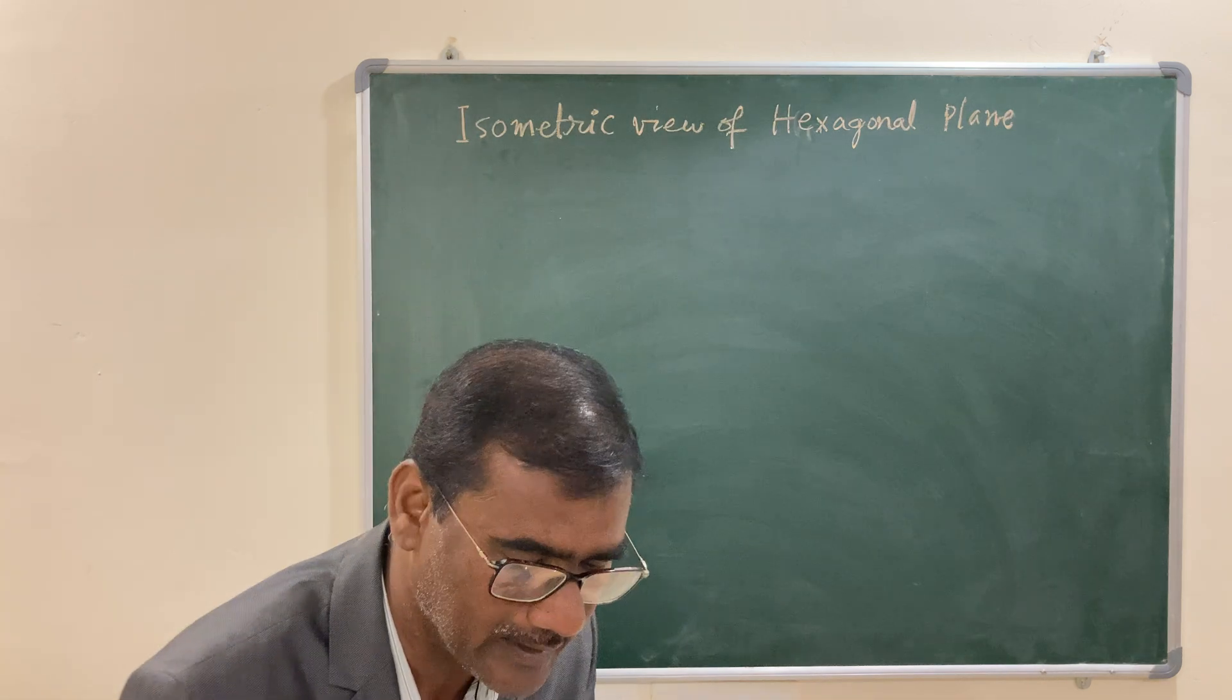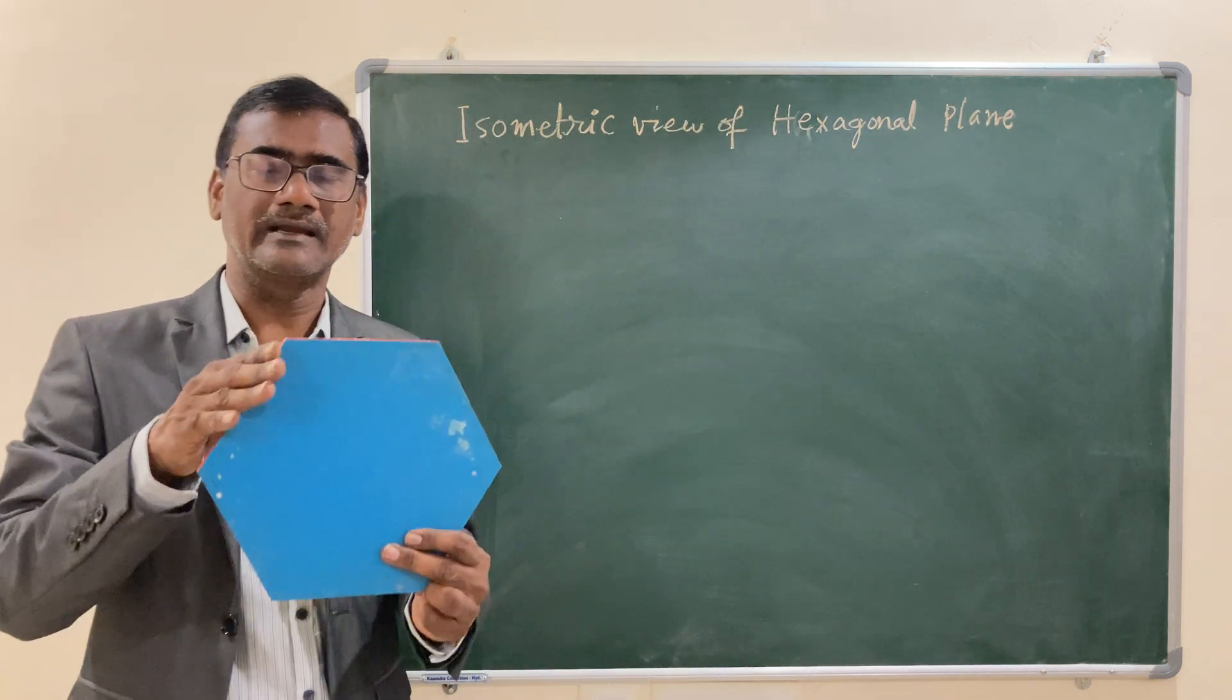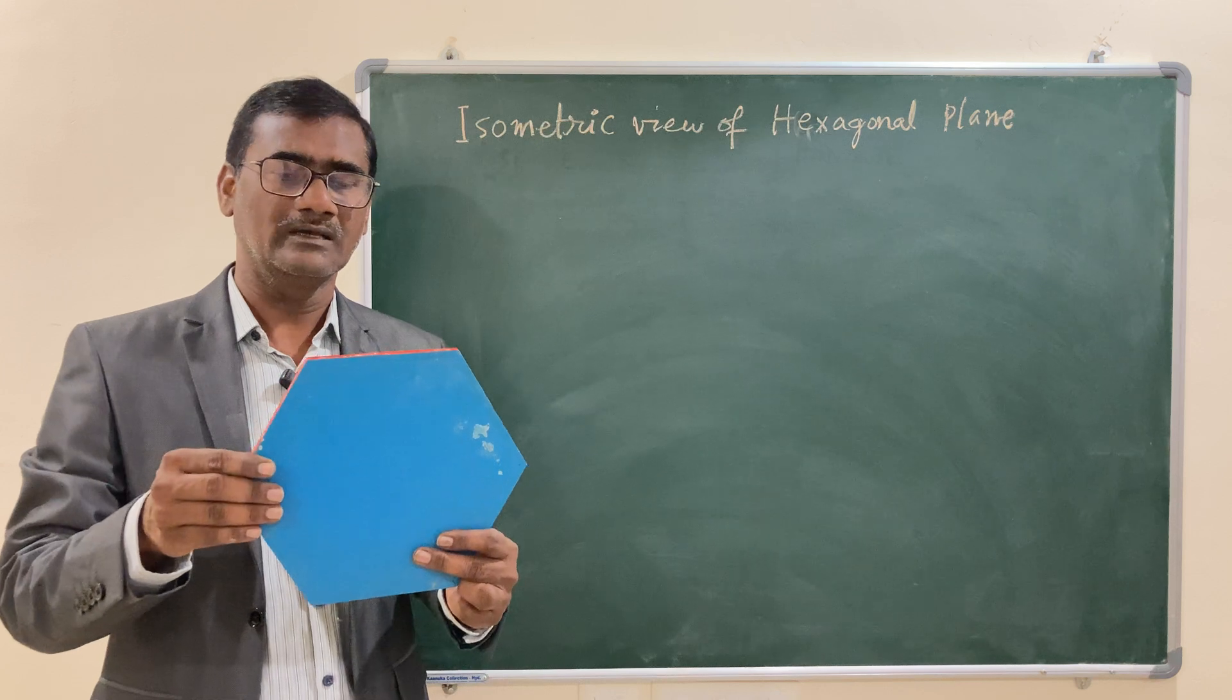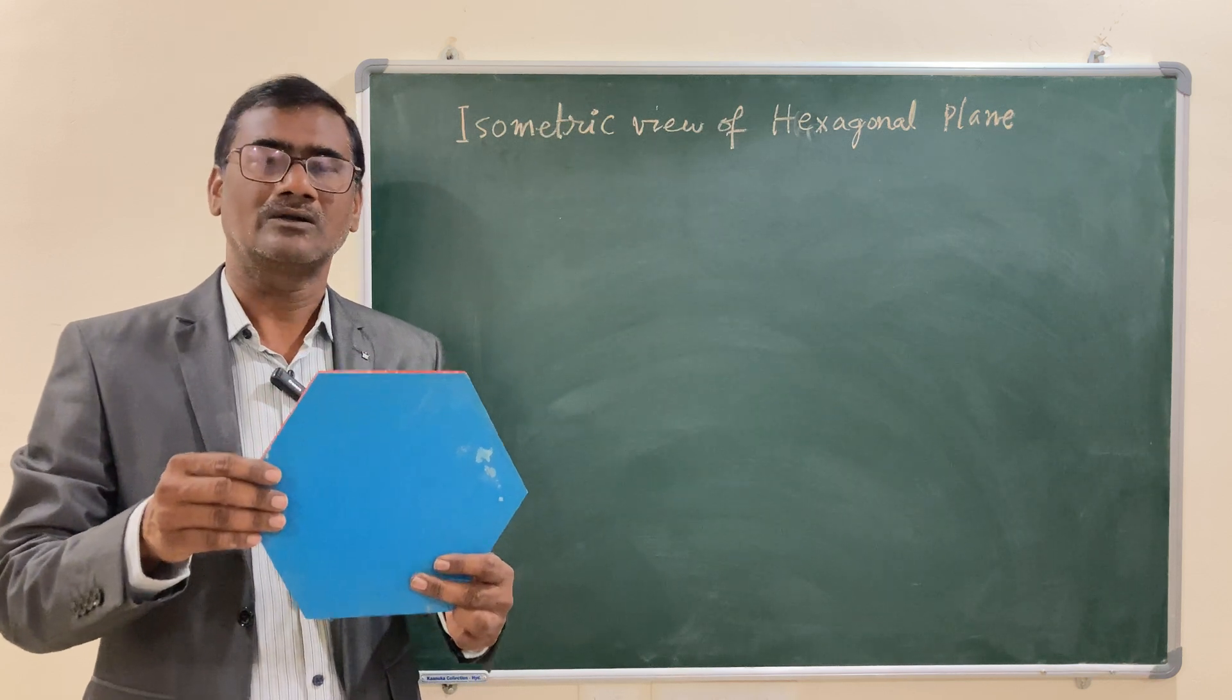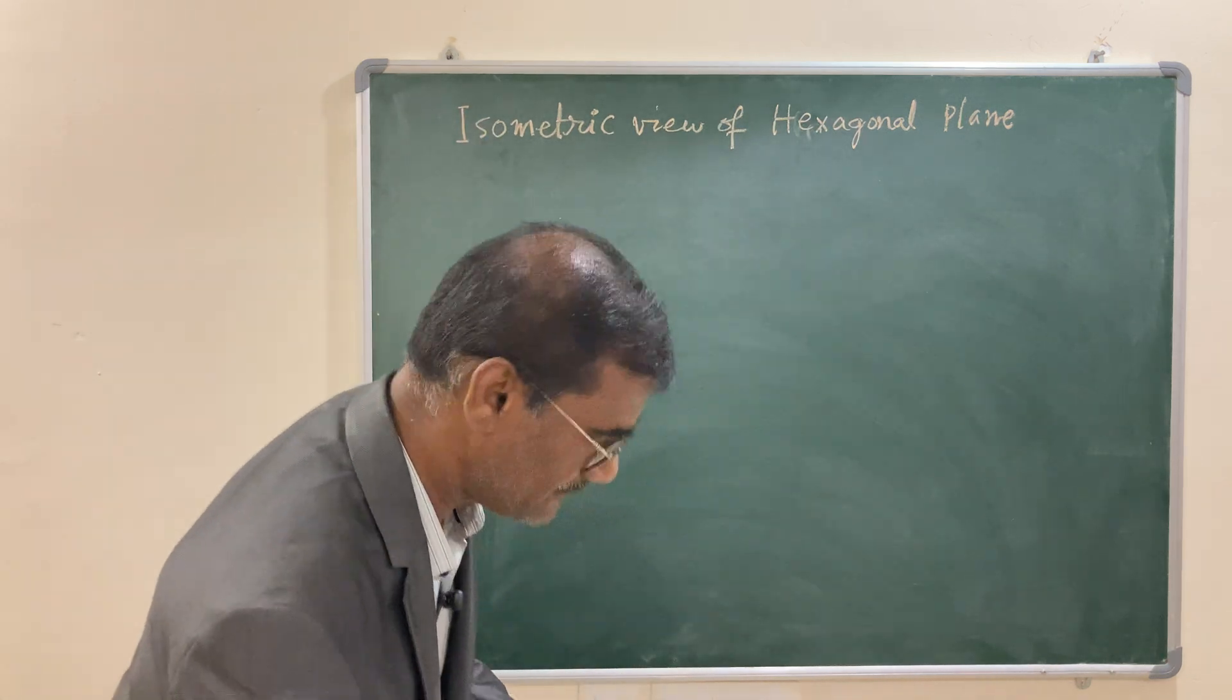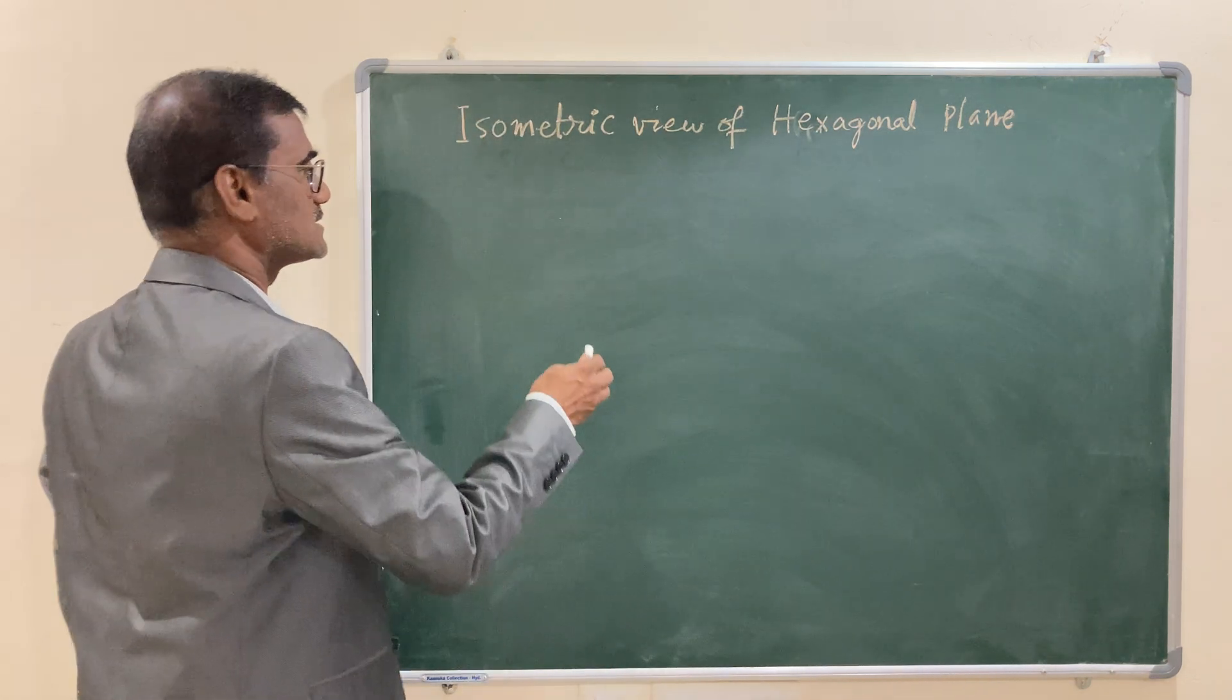As you know, in a hexagonal plane, you have certain edges or non-isometric edges. Obviously, whenever you come across with non-isometric edges, you need to draw the orthographic projection. So, let us draw orthographic projections using circle method.